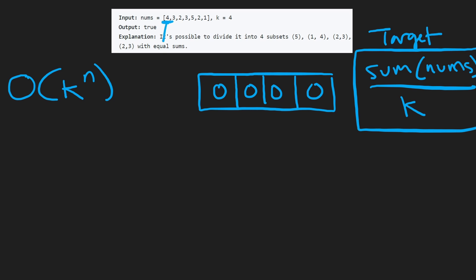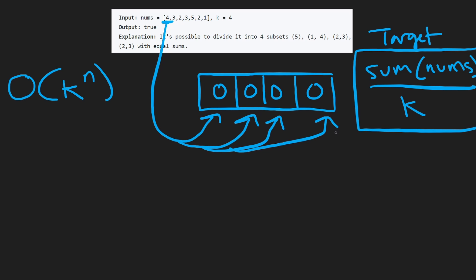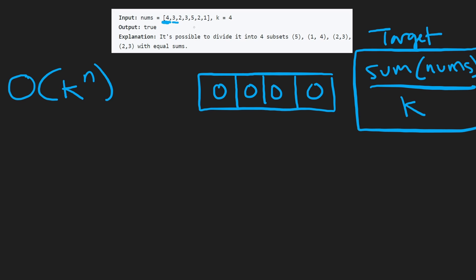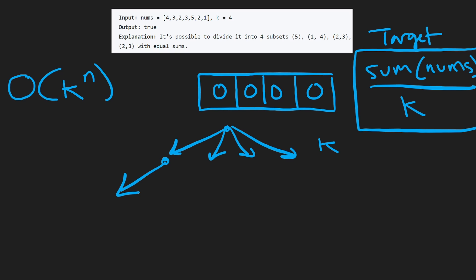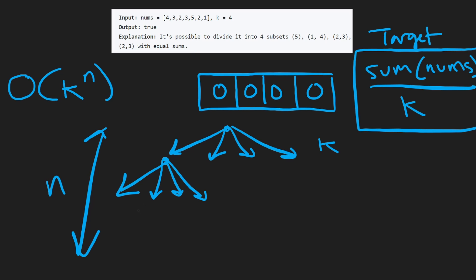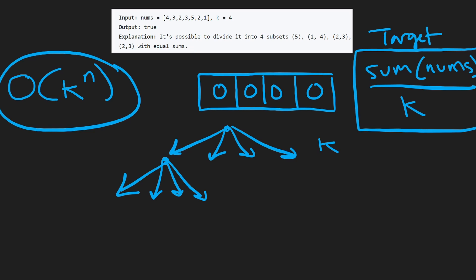We're going to have that choice for every single value in the input array. If we drew the decision tree, we'd have k decisions each time, and we do that for every integer. You can already tell how huge this tree is going to be. The height of the tree is n because we have n integers in the input array — that's where the time complexity k to the power of n comes from.